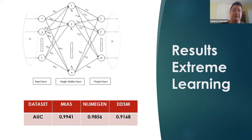This was done on three different datasets, on the MIAS, which had 26 ROIs extracted from it, on the Nijmegen, which had 103 ROIs extracted from it, and on the DDSM, which had 150 ROIs extracted from it, and these are the results you see of area under curve.